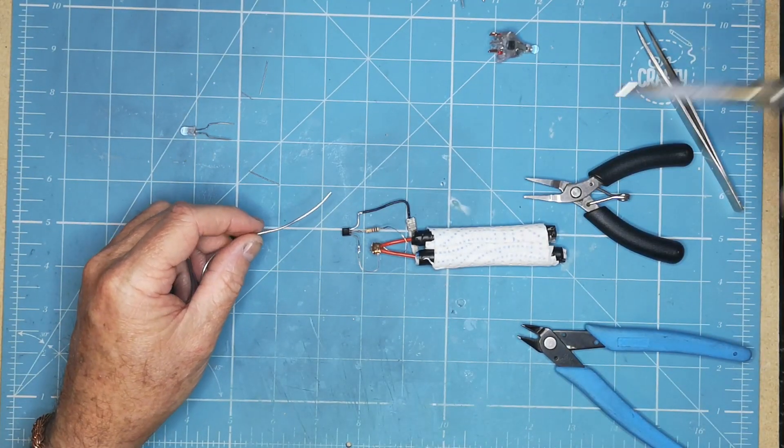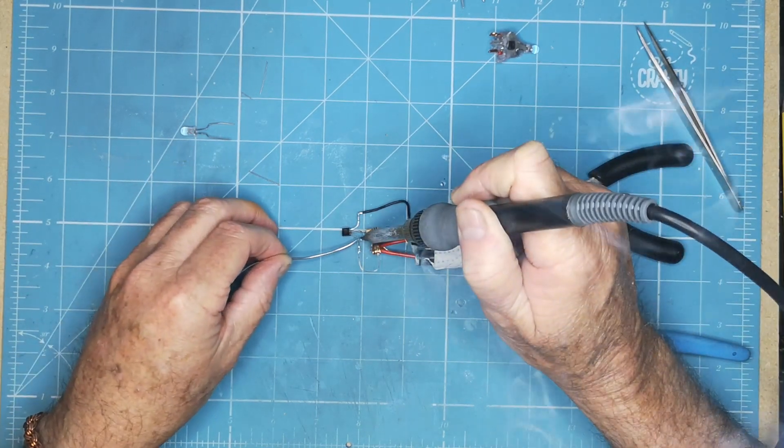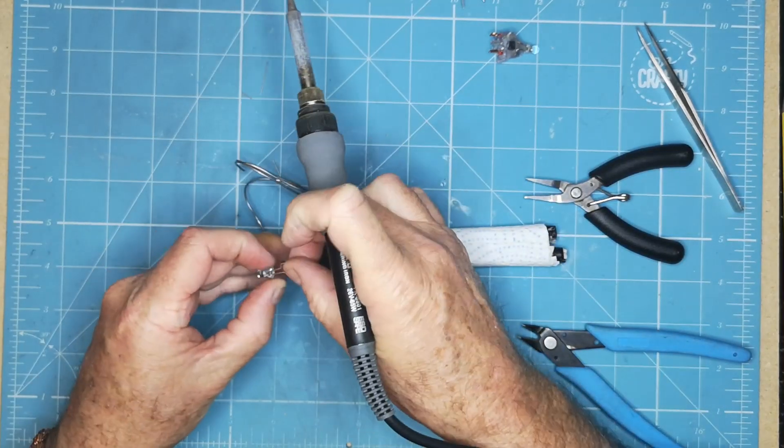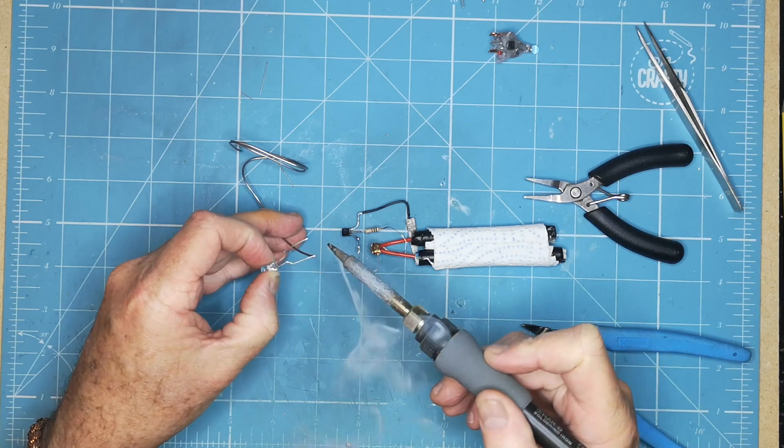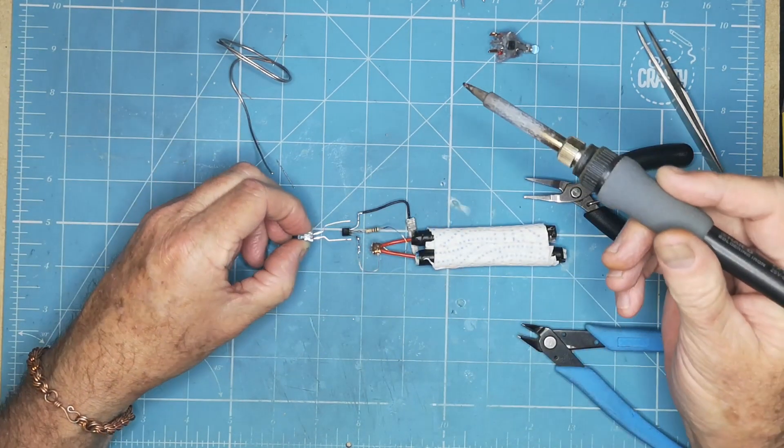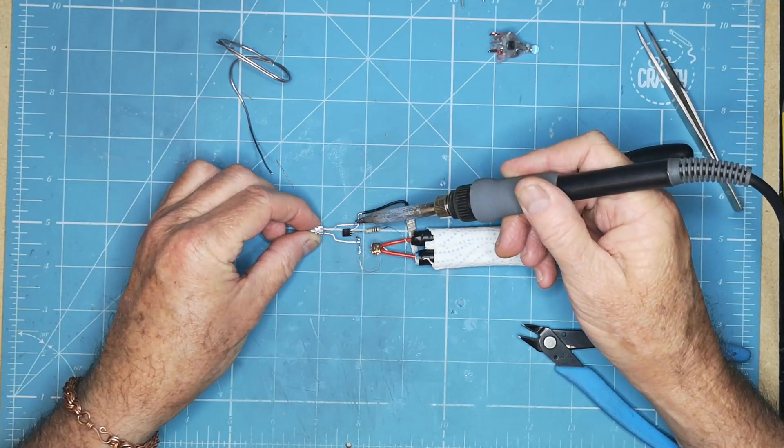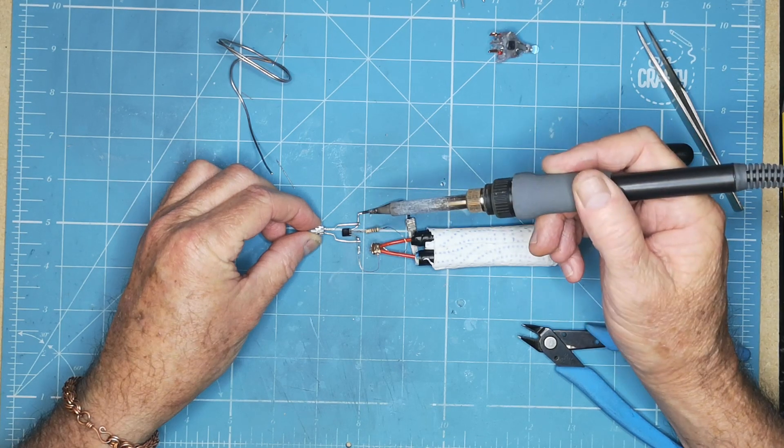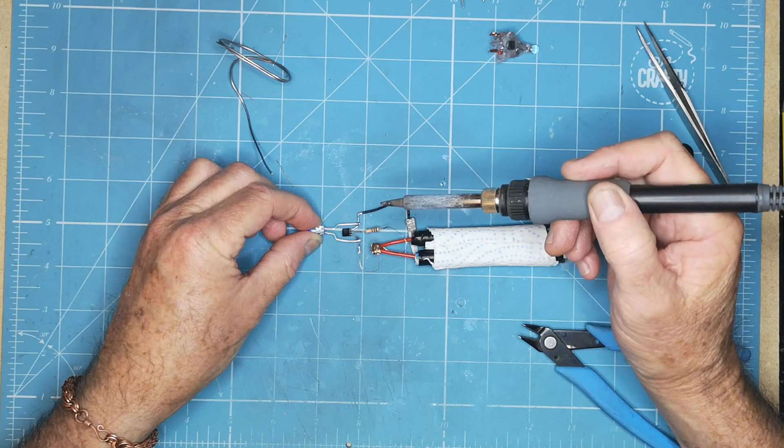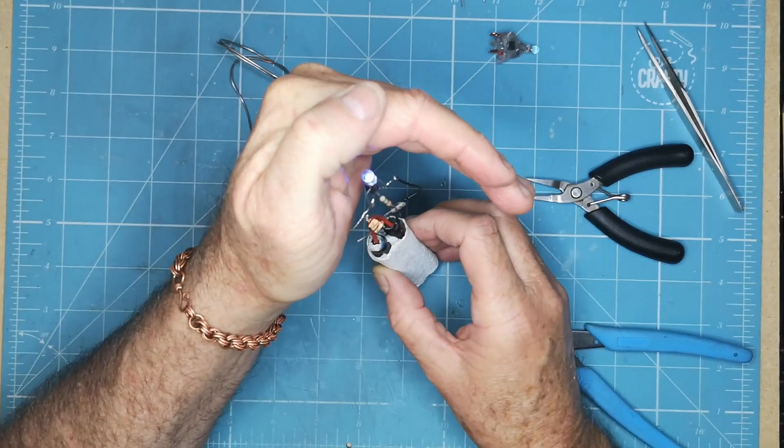The solder is not very good so we will just touch that, touch that, and just tin both of those. And oh we almost put it the wrong way around. Okay so we'll just touch that, and we'll just touch this. And lo and behold.